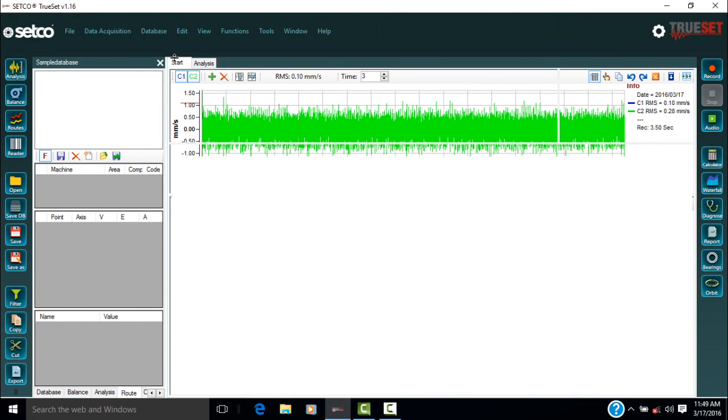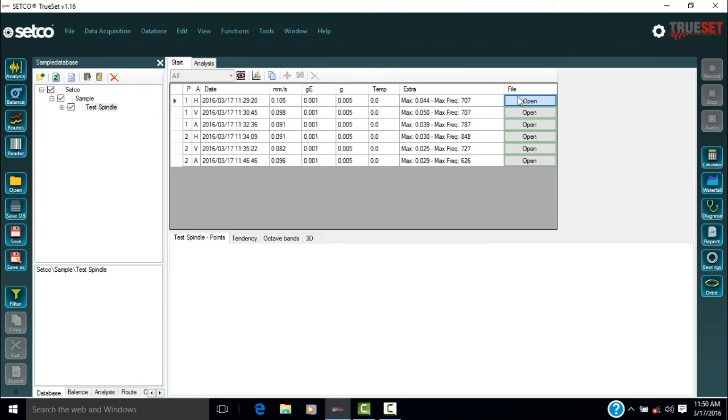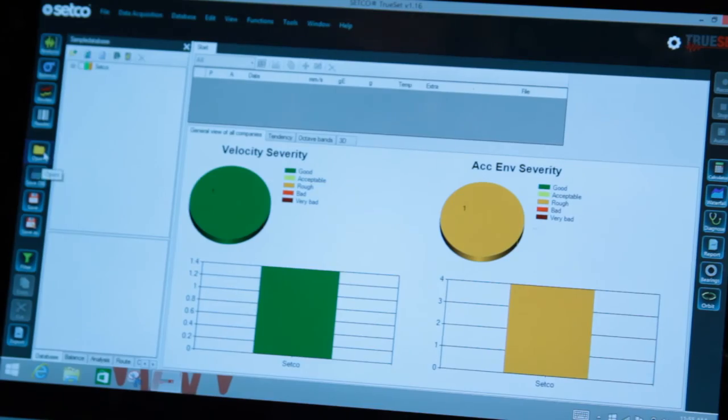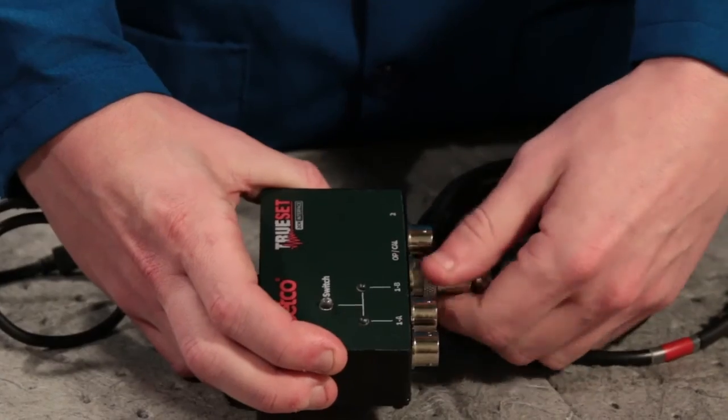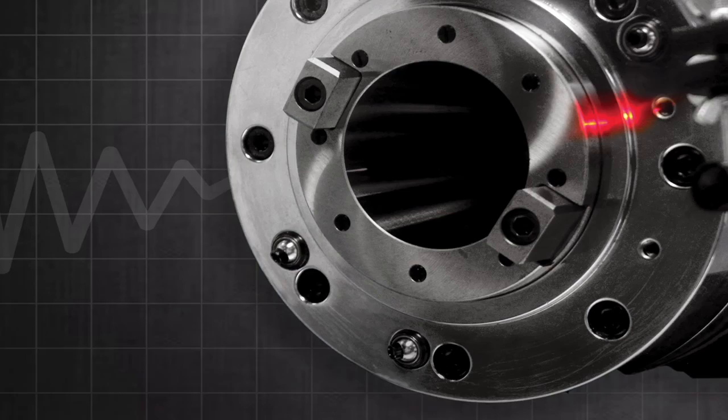The data is now available when the equipment is selected in the database tree with the start menu active. This concludes how to add equipment to a database and take a route. If necessary, you may review the material again or move ahead to the next section, developing the data.